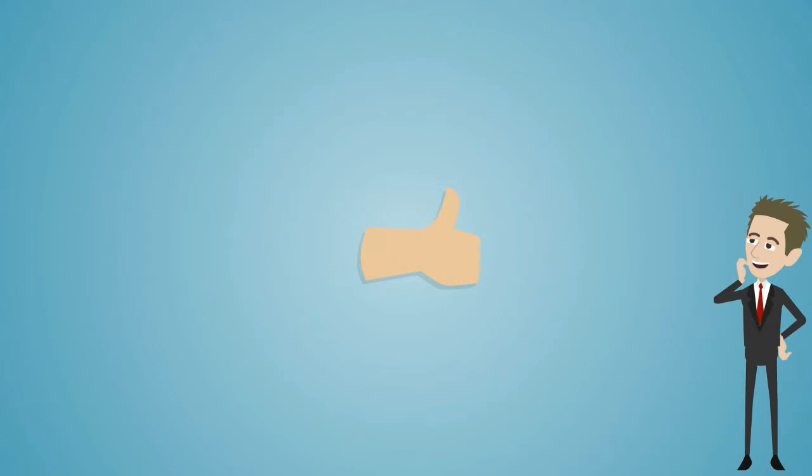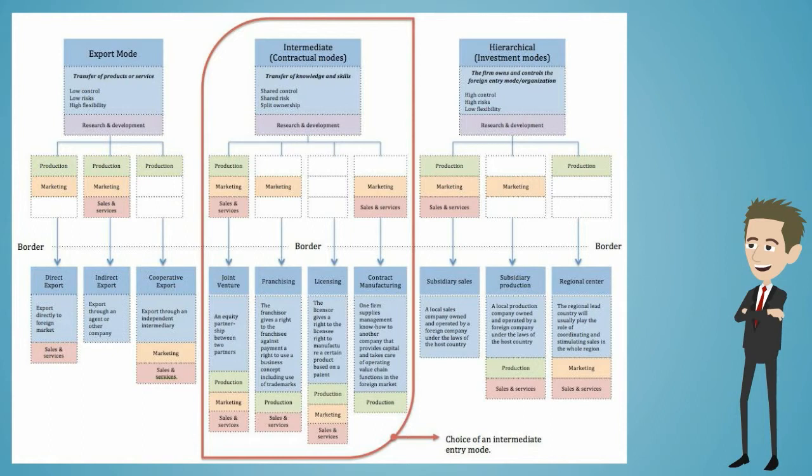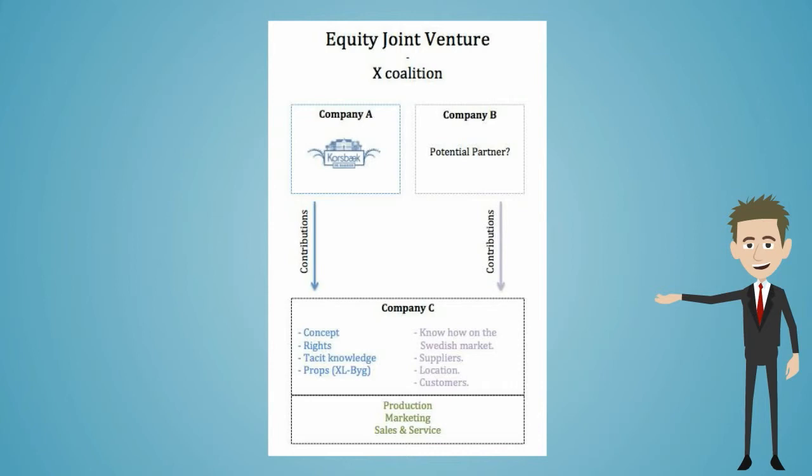Let's look at some of the advantages and disadvantages when entering a joint venture, starting with advantages. A joint venture speeds up the implementation process as Korsberg på Bagen can rely on the partner's knowledge and expertise in the Swedish market and avoid the hassle of gaining this expertise themselves. A joint venture also reduces the costs and risks normally taken on by the exporting company, in our case Korsberg på Bagen, since they are two companies creating a joint company. Costs, risks, and profits will be shared.